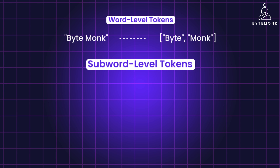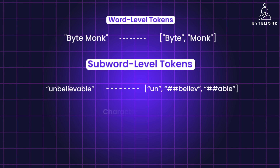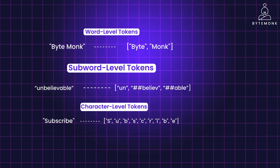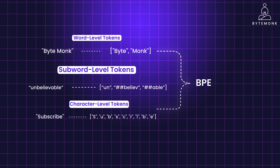For example, 'unbelievable' can be tokenized into 'un', 'believe', and 'able'. In character-level tokens, each token represents a single character — for example, 'subscribe' can be tokenized into its individual characters. Byte-pair encoding is a hybrid approach that starts with character-level tokenization and progressively merges the most frequent pairs of tokens.